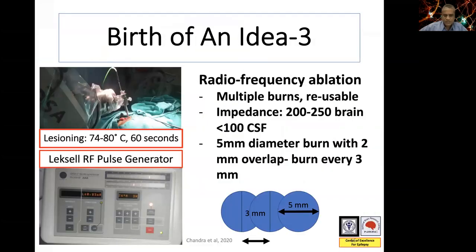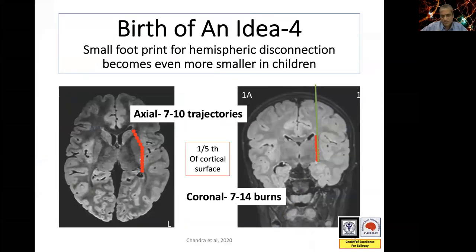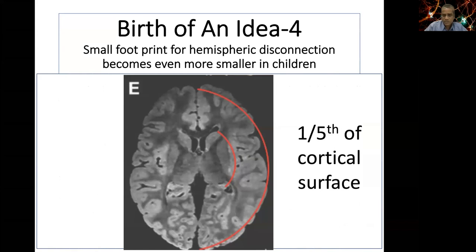RF ablation produces a sphere of 5 mm when burned at 74 to 80 degrees for 60 seconds. If you overlap spheres every 3 mm with a 2 mm overlap margin, you potentially produce a linear burn providing complete disconnection. We calculated the possible number of trajectories for thermocoagulative hemispherotomy. The hemispheric footprint is about one-fifth the size of the cortical footprint, and we found we would require approximately 7 to 10 trajectories and 7 to 14 burns per trajectory.